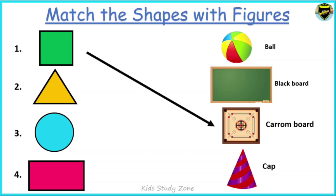Now let us see the next shape — this is a triangle. The options left are ball, blackboard, and cap. The shape triangle matches with a cap. Very good!